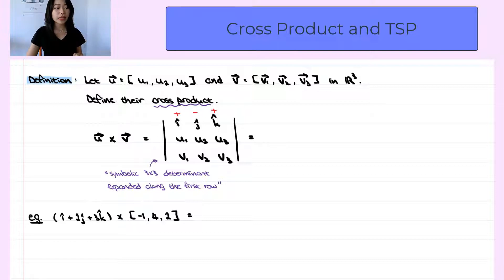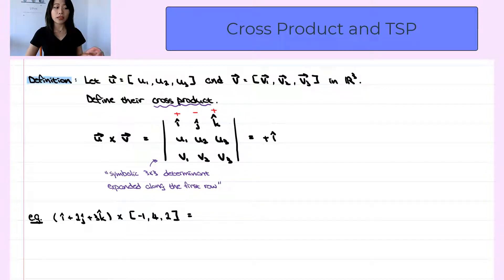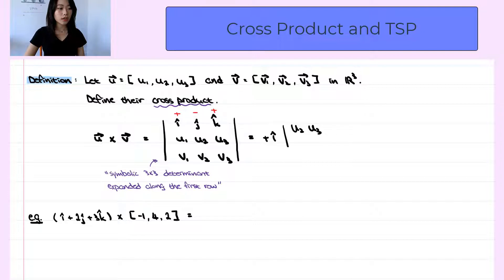Then if we expand the determinant along the first row, it will be plus the first component in the first row, i hat, then we hide the row and the column of this entry. So we hide the first row and the first column, and take the determinant of the smaller matrix. So if we ignore the first row and the first column, we'll be left with u2, u3, v2, and v3.